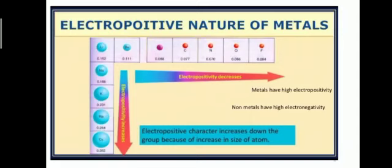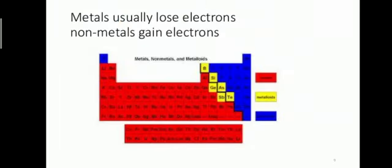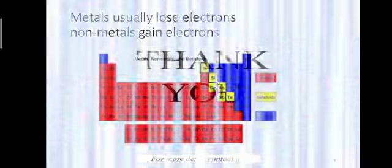Along a group, the metallic character increases and non-metallic character decreases. In group four, carbon is a non-metal, silicon and germanium are metalloids, while tin and lead are metals. In group five, nitrogen and phosphorus are non-metals, arsenic and antimony are metalloids, while bismuth is a metal. Metals at the bottom of a group represent increasing metallic character. Metals usually lose electrons while non-metals gain electrons.